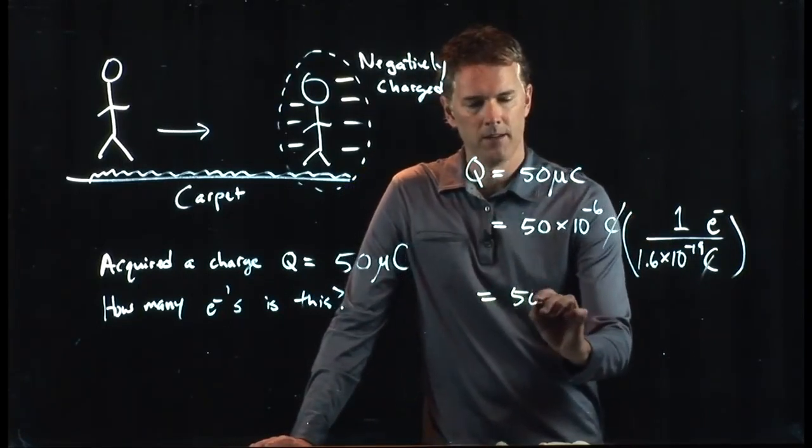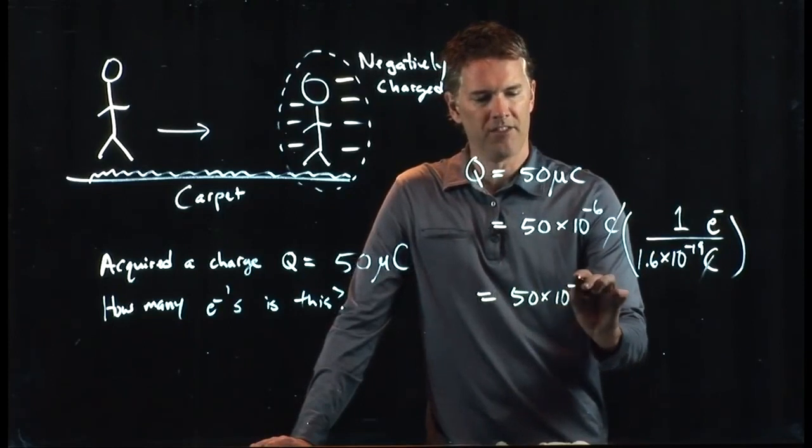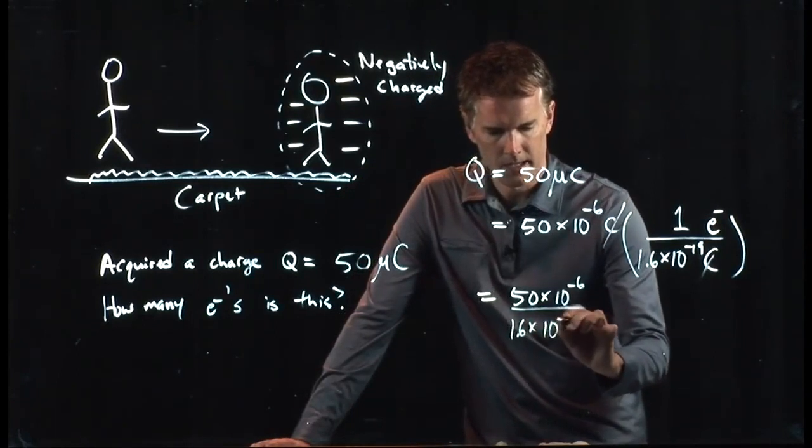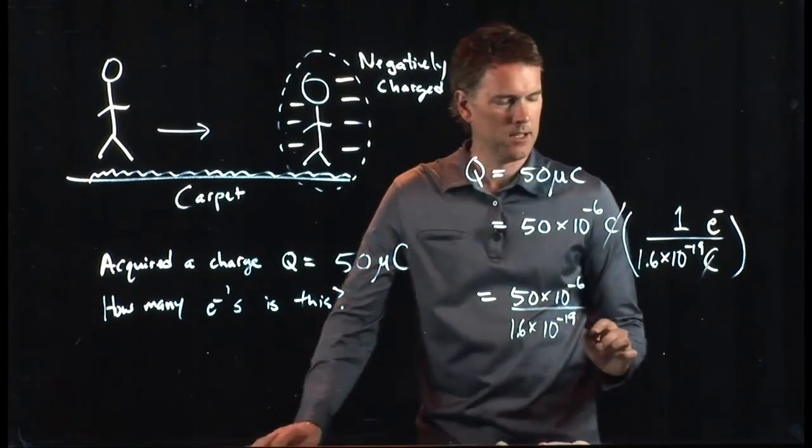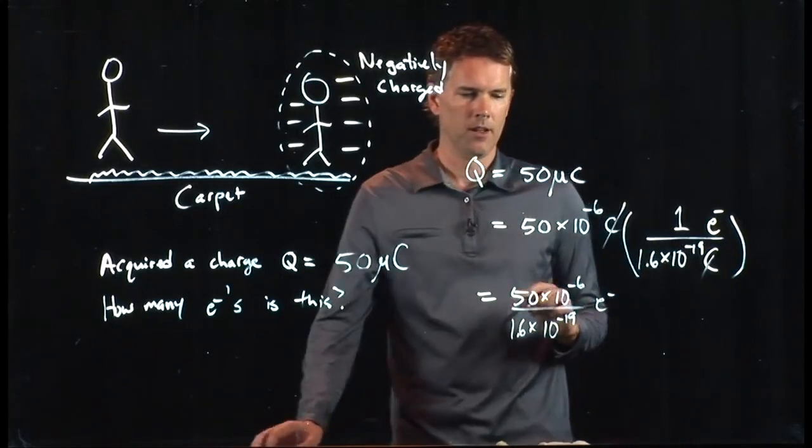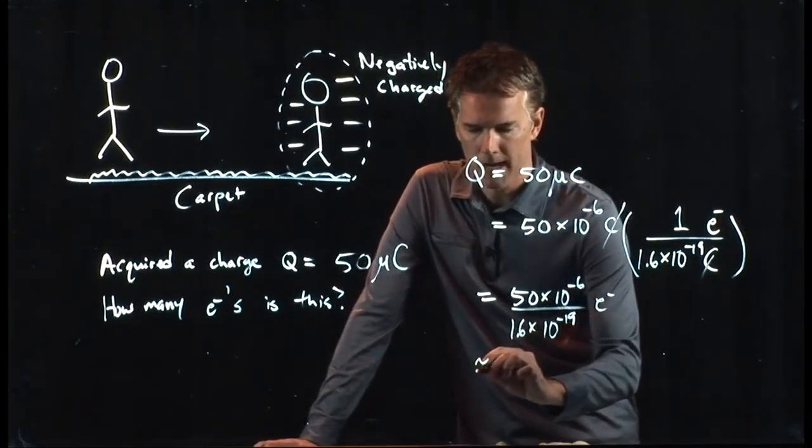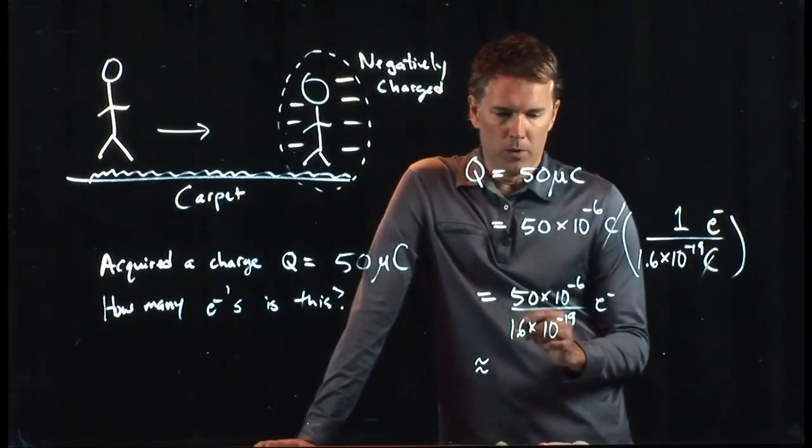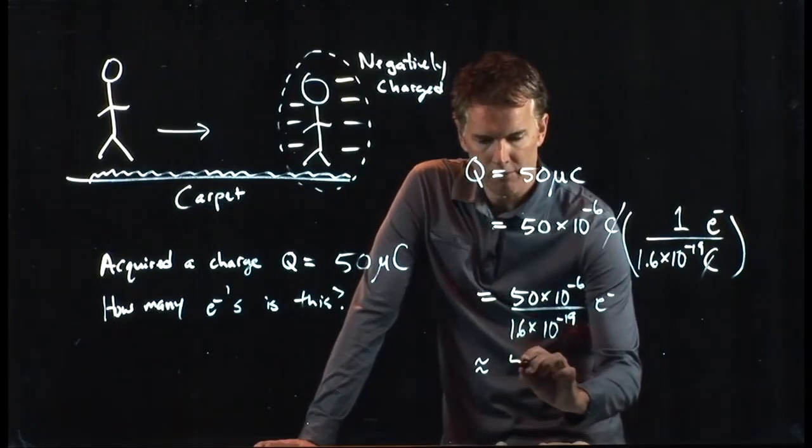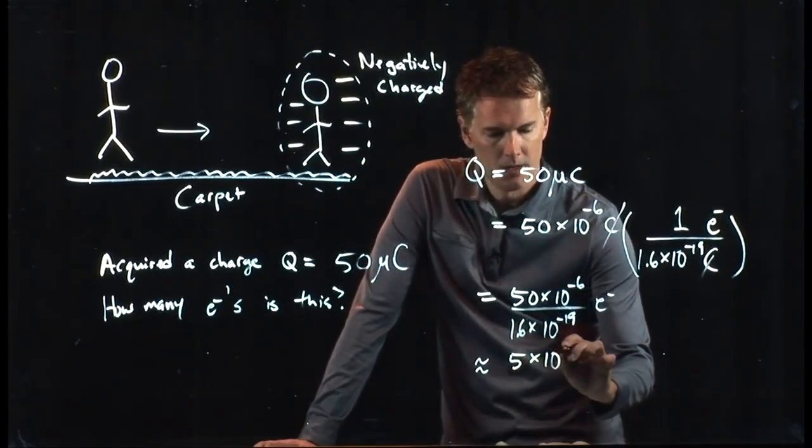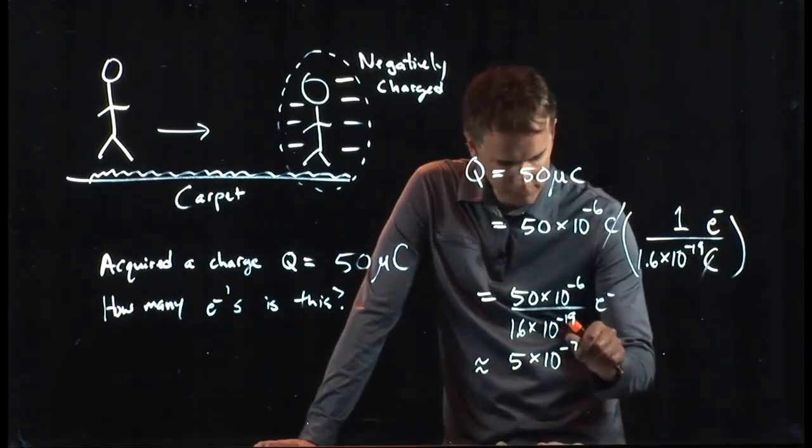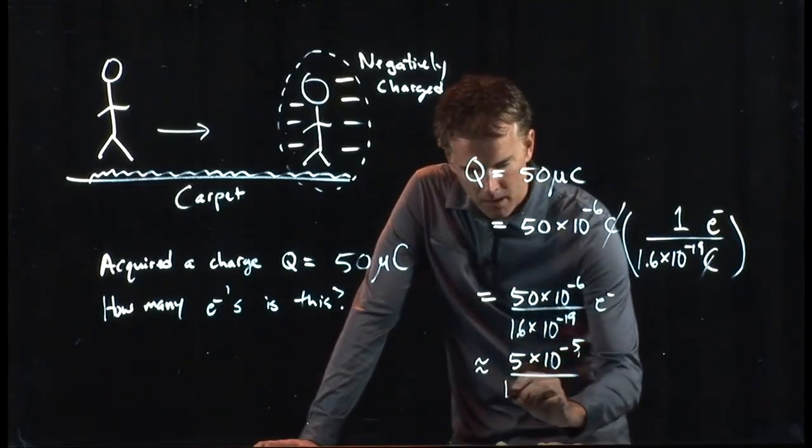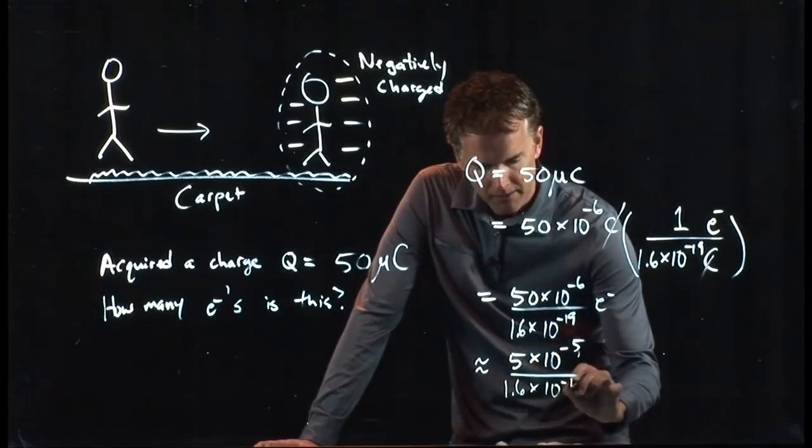And we get 50 times 10 to the minus 6 divided by 1.6 times 10 to the minus 19, and we're left with electrons. And now you can run this number in your calculator. I'll approximate it here. 50 over 1.6, that's the same as 5 times 10 to the minus 5 divided by 1.6 times 10 to the minus 19.